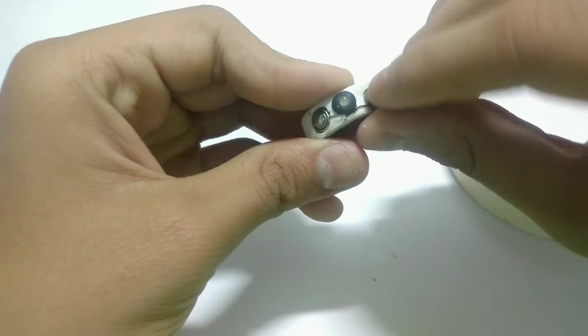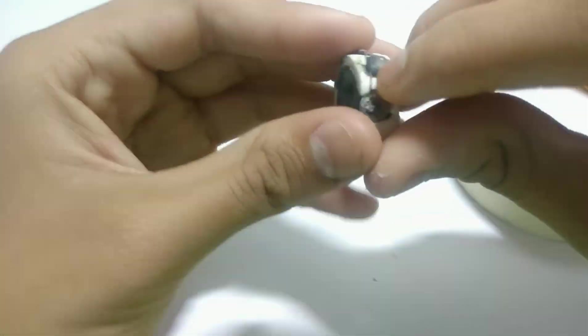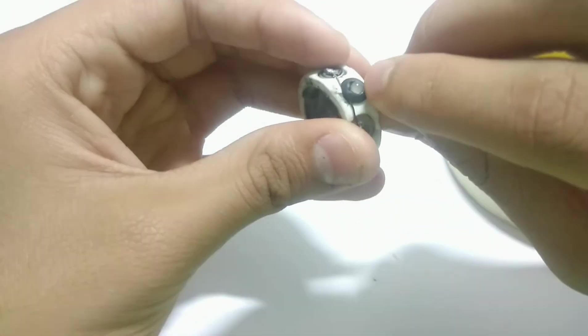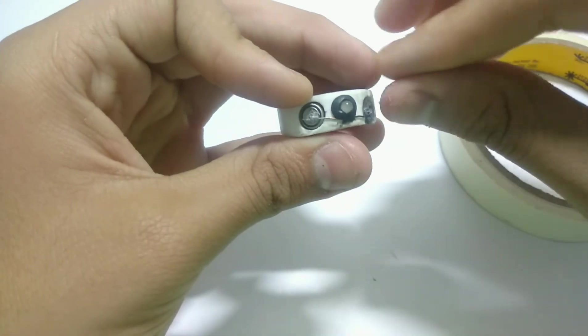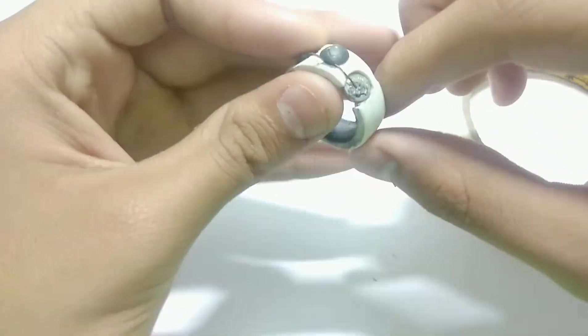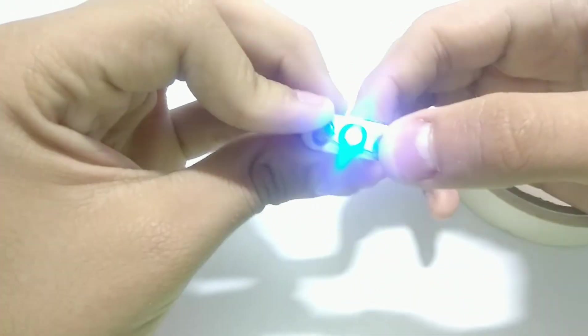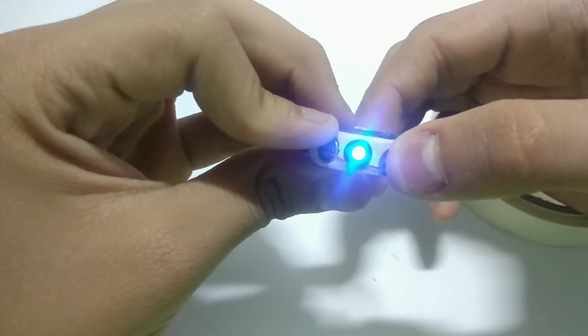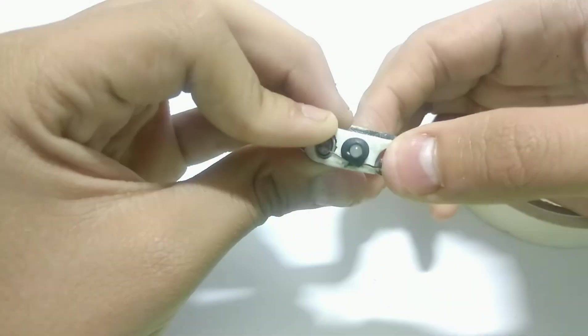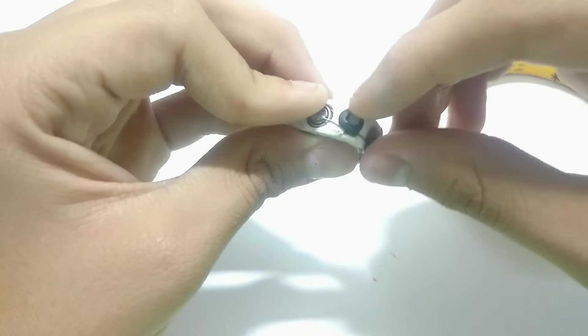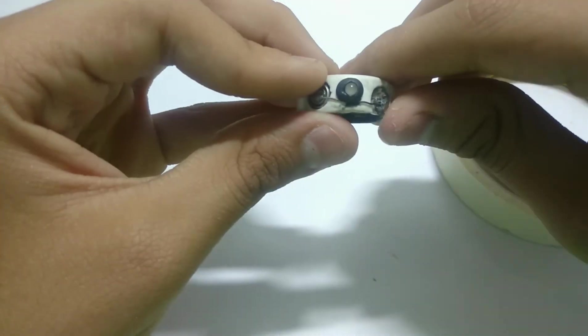Instead of using knot I have decided to use this epoxy to make the ring and cover it around. It works pretty well and I will be painting this ring gold. So let's do it.